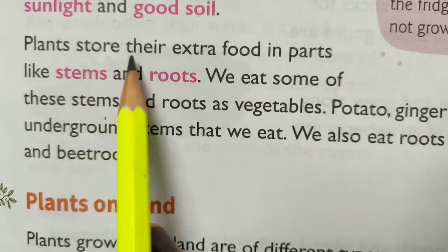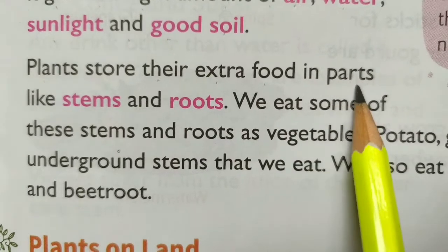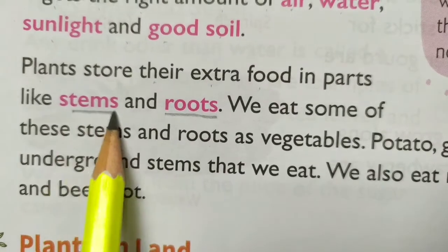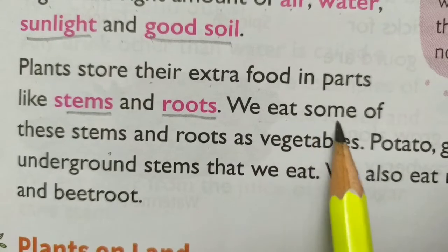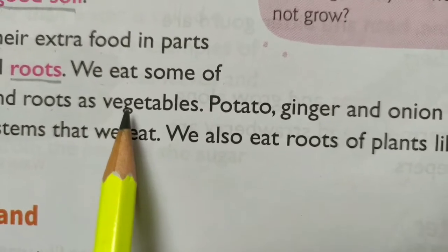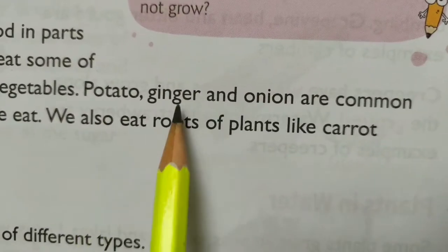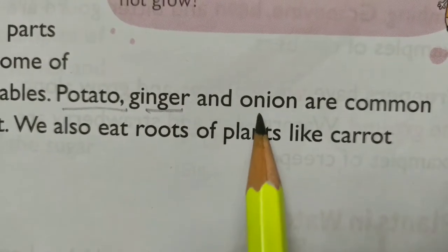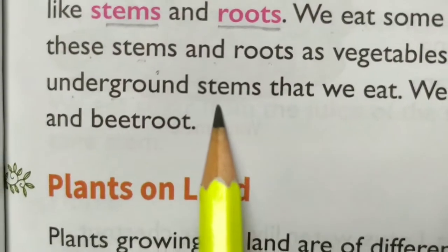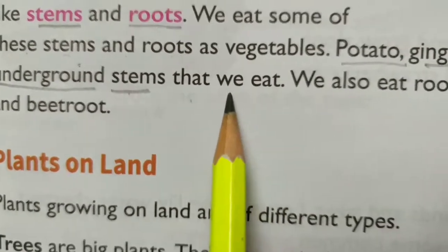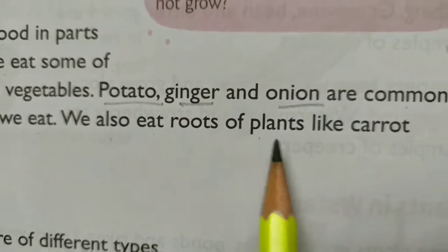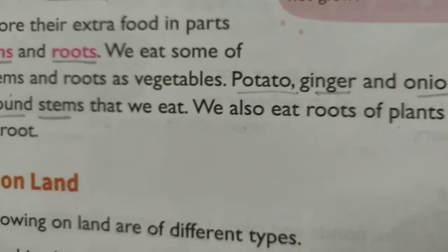Plants store their extra food in parts like stems and roots. We eat some of these stems and roots as vegetables. Potato, ginger and onion are common underground stems that we eat. We also eat roots of plants like carrot and beetroot.